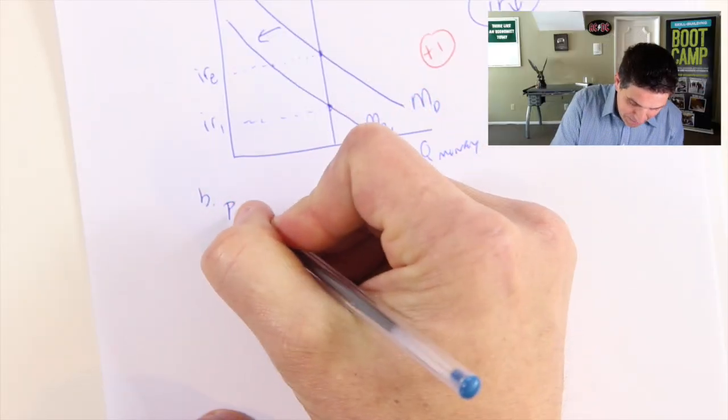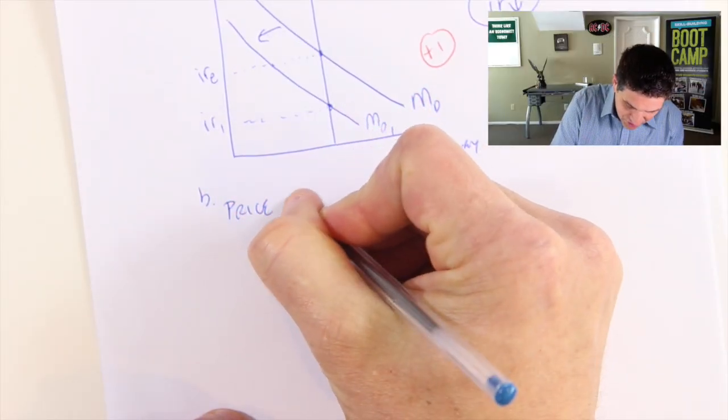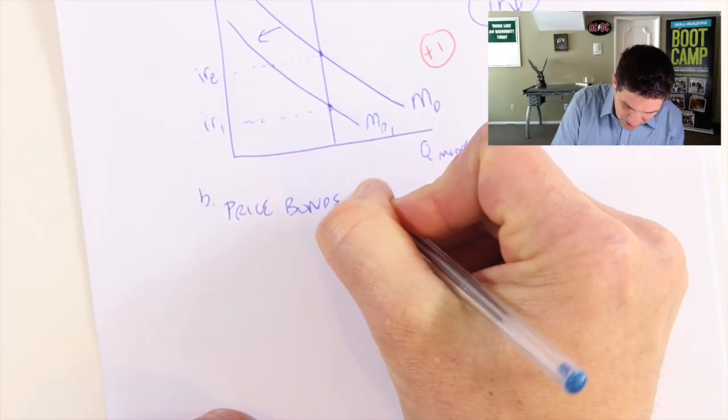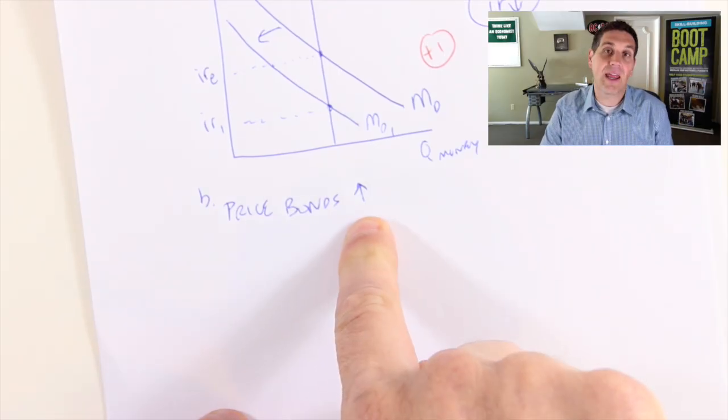This question doesn't ask you to explain. The price of bonds will increase, decrease, or stay the same. When they ask what happens to something, you can just say up, down, or same. When you have to explain, you add more information. In this case, the price of previously issued bonds will increase. That's the right answer.